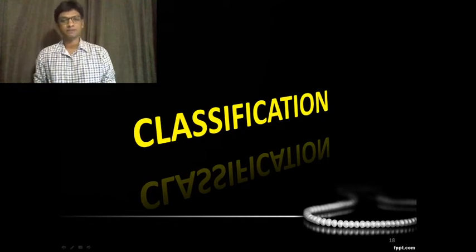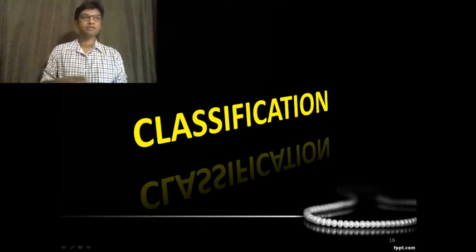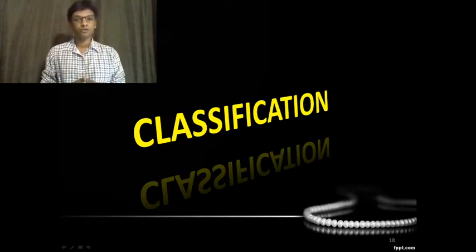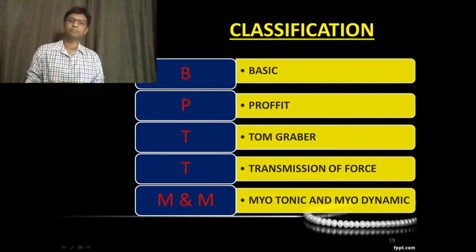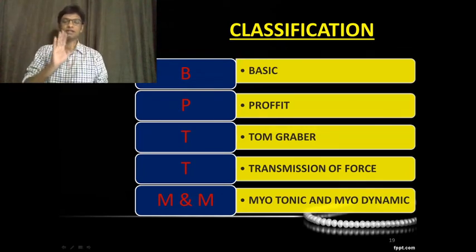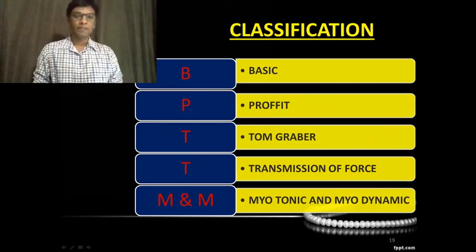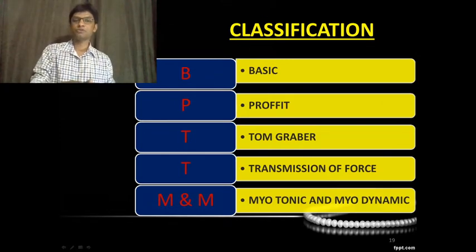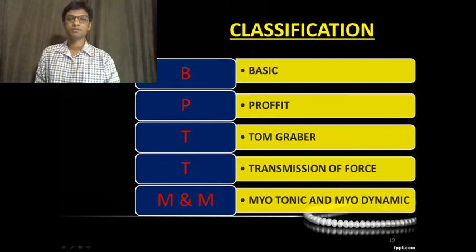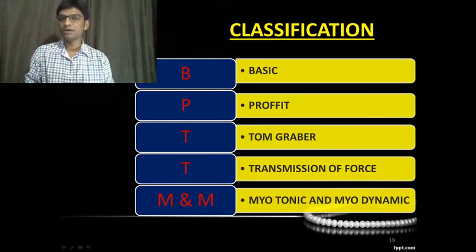Now into the classification. Remember this acronym: BPTT MNM. B stands for Basic classification, P for Proffitt, T for Tom Graber, another T for Transmission of force, M for Myotonic, and M for Myodynamic. That's all you need to remember — BPTT MNM.